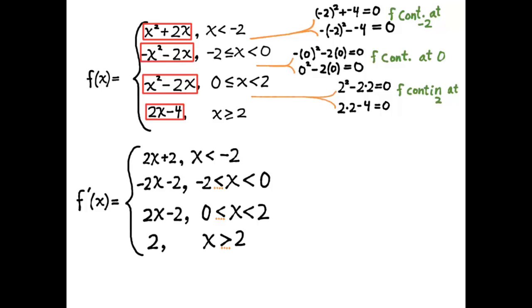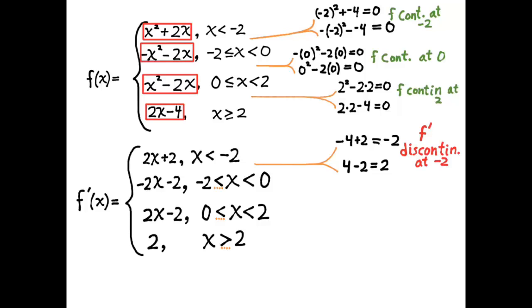How do I determine whether f is differentiable at those junction points? I have to check whether differentiating from the left and differentiating from the right give me the same value — in other words, I have to determine whether f prime is continuous. So I plug in the junction value negative 2 into 2x plus 2 and I get negative 2. I plug it into negative 2x minus 2 and I get positive 2. These are different numbers, which means f prime is discontinuous at x equals negative 2, so f of x is not differentiable at negative 2.